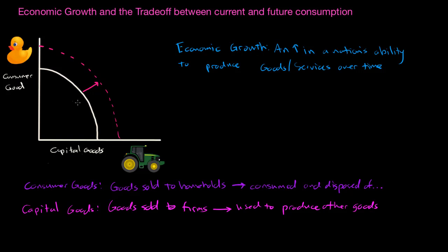Let's assume the white PPC represents today's production possibilities for a hypothetical country. A country can choose to produce more consumer goods today by producing at a point such as point A. Notice that at point A, the country is producing more rubber duckies, but the opportunity cost is the capital goods — the tools — that it could be producing instead. If a country were to move from point A to point B, it would give up all those consumer goods that it could have produced at point A.